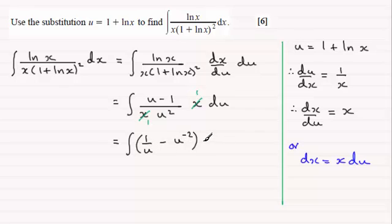Now the integral of 1 over u is the natural log of u. And then the integral of u to the minus 2, if we add 1 to the power, we've got minus u to the power minus 1, and divide by that power minus 1. And not forgetting the constant of integration plus c.